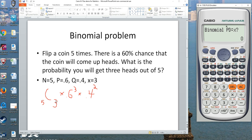Let's list the variables. We want x to be three. You want n to be five. And you want your probability of success to be 0.6. And there you get the same number.